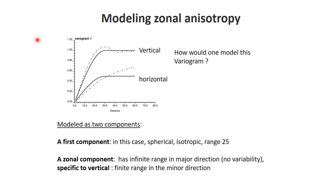Now what about zonal anisotropy? Zonal anisotropy is essentially a case where the variance is changing with direction. For example, in the vertical direction you see the same range but a lesser sill — a smaller variance — than in the horizontal direction. How do we deal with this? The way it's dealt with is essentially the same as with geometric anisotropy: we're going to explain zonal anisotropy as a sum of two geometric anisotropies.